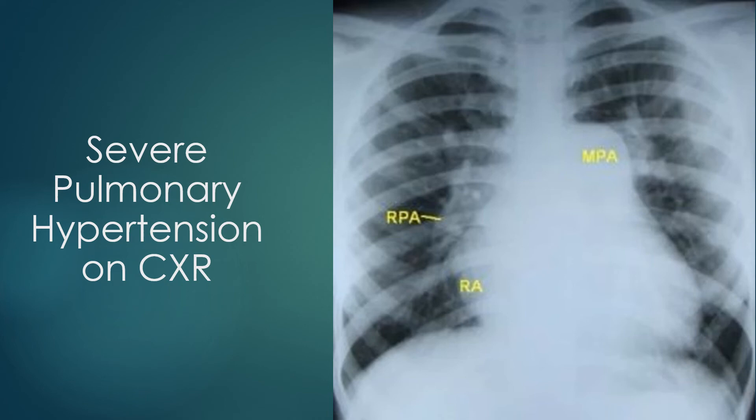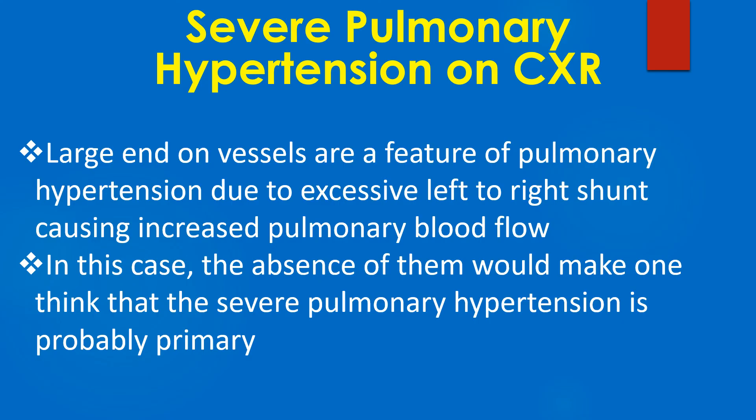The end-on views of blood vessels seen through the RPA shadow are tiny, indicating that RPA dilatation is unlikely to be due to increased pulmonary blood flow. Large end-on vessels are a feature of pulmonary hypertension due to excessive left-to-right shunt causing increased pulmonary blood flow. In this case, the absence of them would suggest that the severe pulmonary hypertension is probably primary pulmonary hypertension.